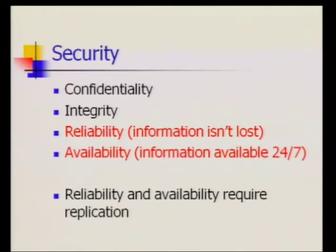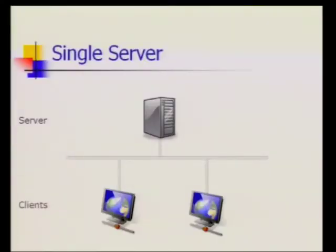Reliability means that whatever information I put online will not be lost in spite of various kinds of failures. Availability means that not only will it not be lost, but it will be there when I need it — accessible 24-7. In order to achieve reliability and availability, it's going to require replication. If I stored my information on just one server in the Internet — what I have on this slide is a little picture representing in a stylized way the Internet, with a server providing the storage service and many users accessing that server.